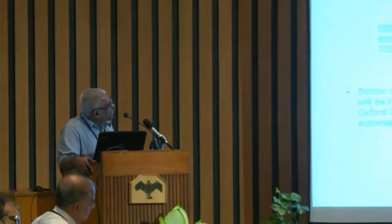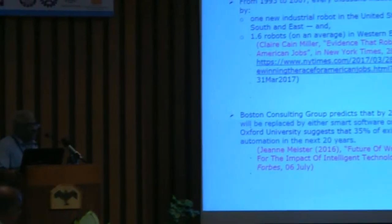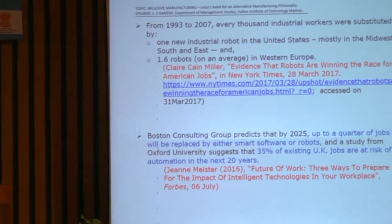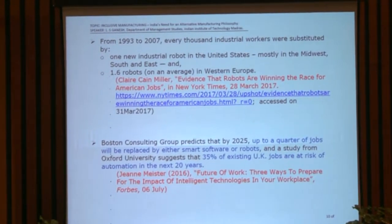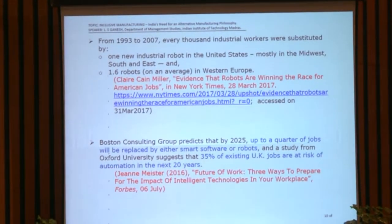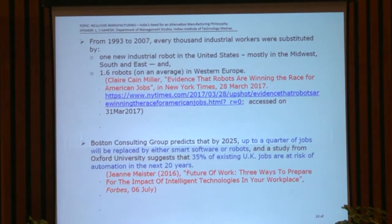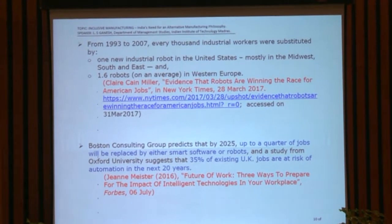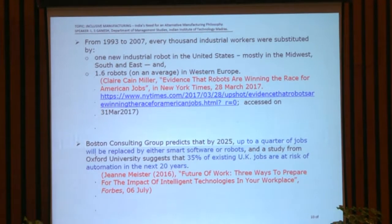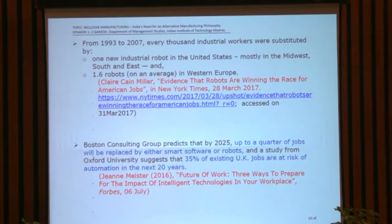From 1993 to 2000, every thousand industrial workers were substituted by one industrial robot in the US — mostly in the Midwest, the so-called 'rust states' — and 1.6 robots on average in Western Europe. BCG — Boston Consulting Group — predicts that by 2025, up to a quarter of jobs will be replaced by either smart software or robots.